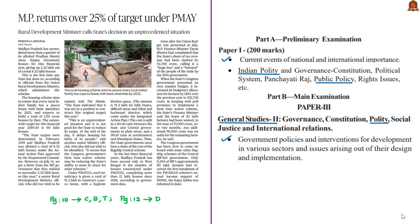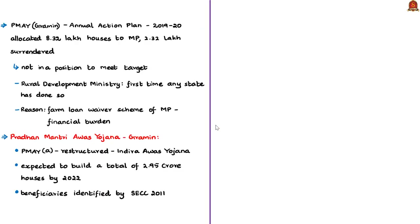The next article covers Pradhan Mantri Avas Yojana Gramin (PMAYG) in Madhya Pradesh. The state has surrendered more than a quarter of its allotted houses for this financial year — out of a target of 8.32 lakh houses, MP surrendered 2.32 lakh houses, citing inability to meet the target. This is reportedly due to the state's loan waiver scheme creating a heavy financial burden on its budget. According to the Union Ministry of Rural Development, this was the first time any state has done so.